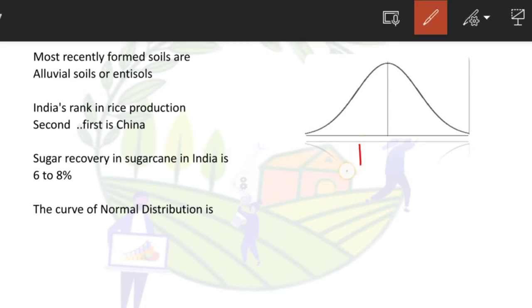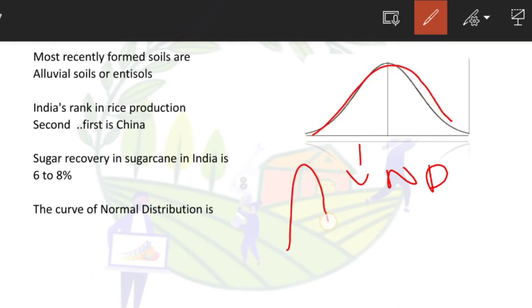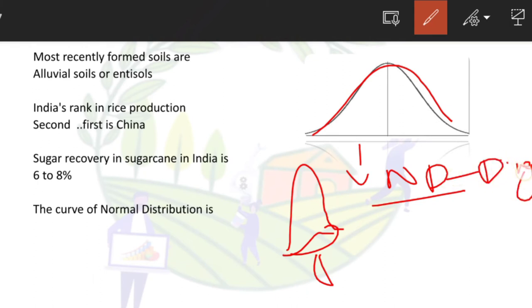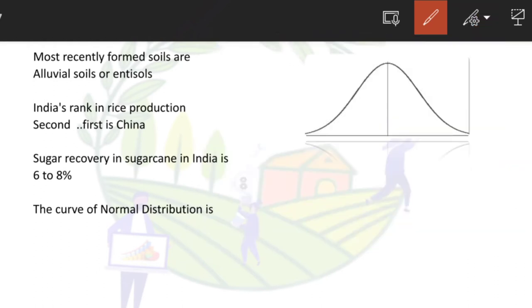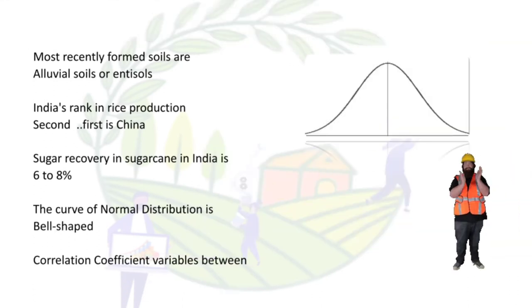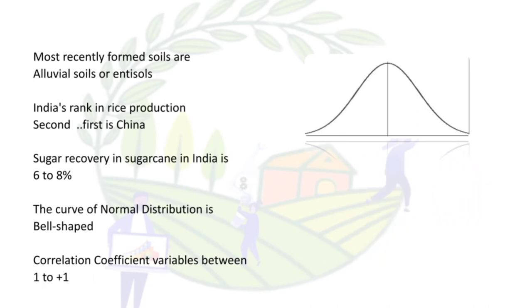The curve of normal distribution is bell-shaped, as you can see here. Remember it as 'ding' — the sound created by a bell — for normal distribution bell shape. Correlation coefficient varies between -1 to +1.